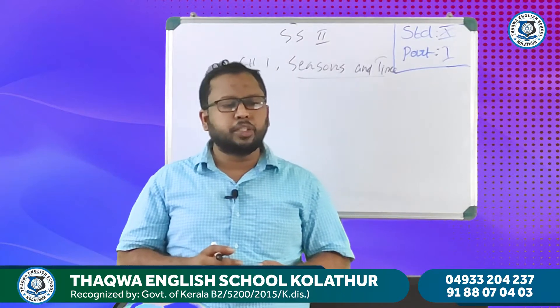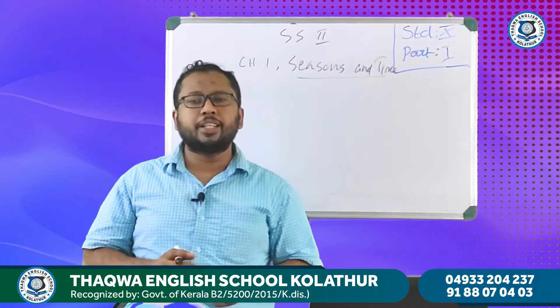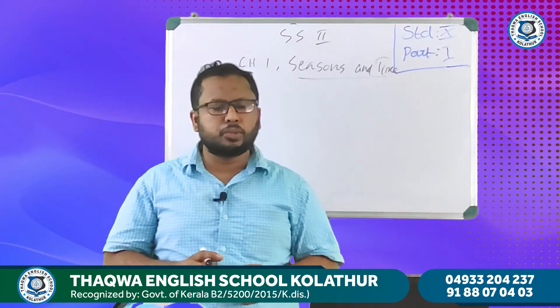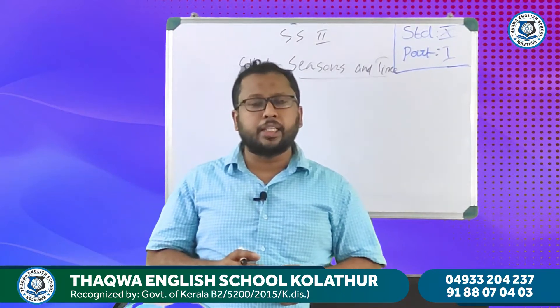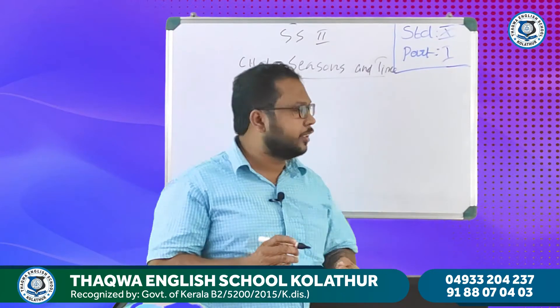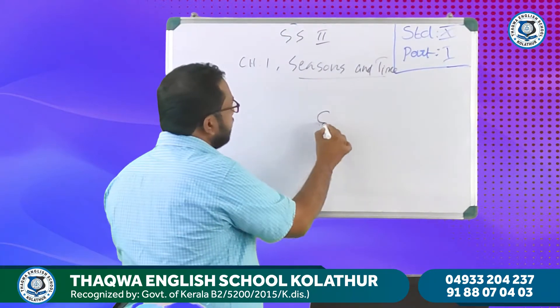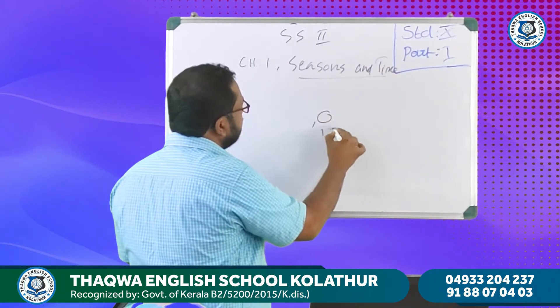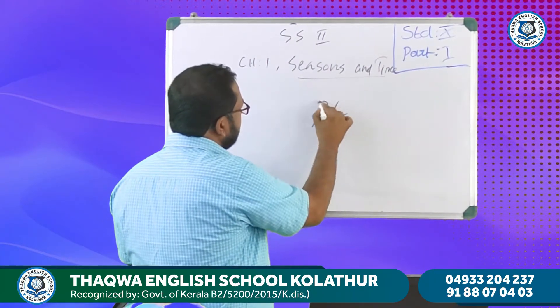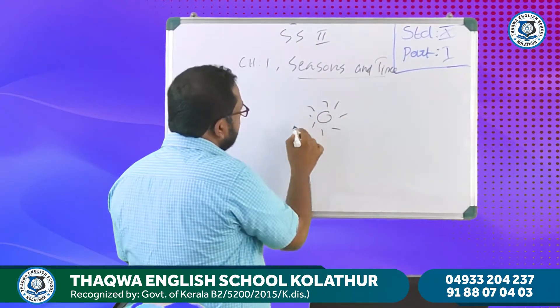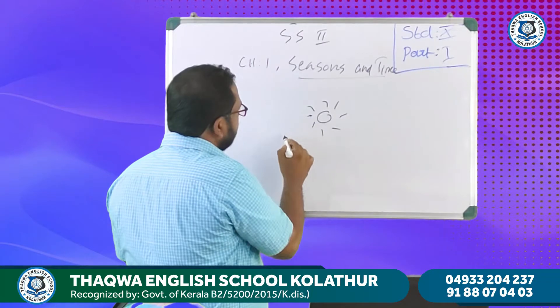Revolution — it is an elliptical orbit in which the earth revolves around the sun. Around the sun, in an elliptical orbit.